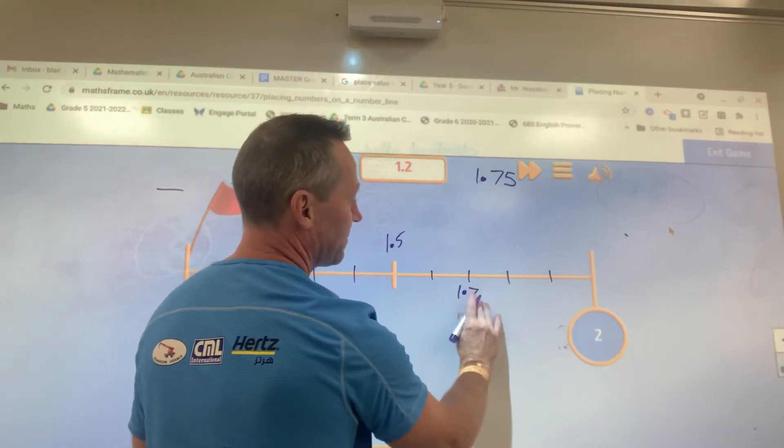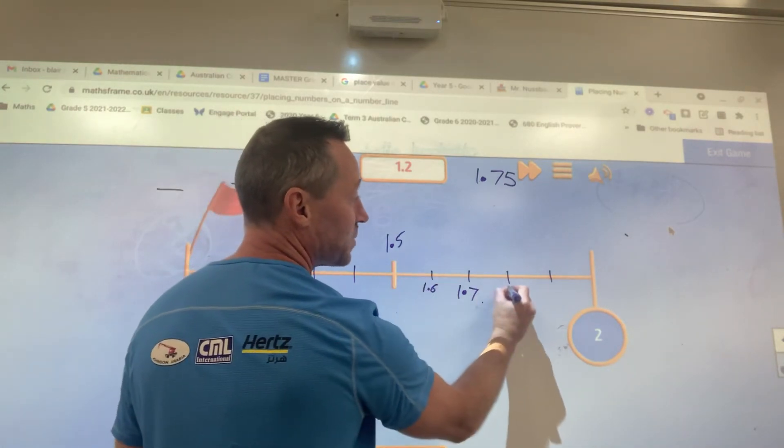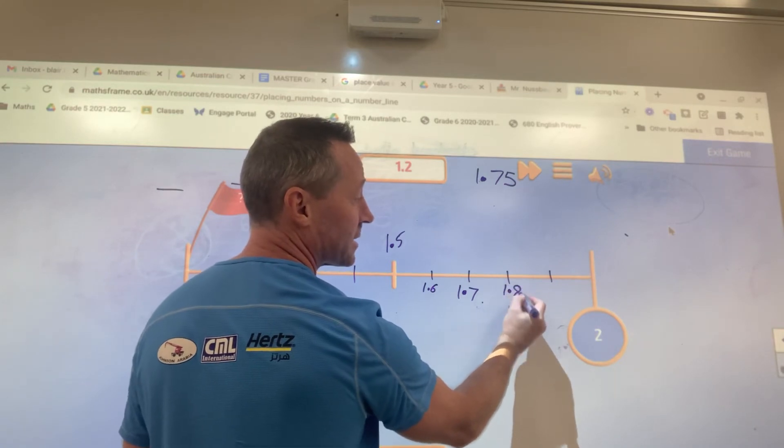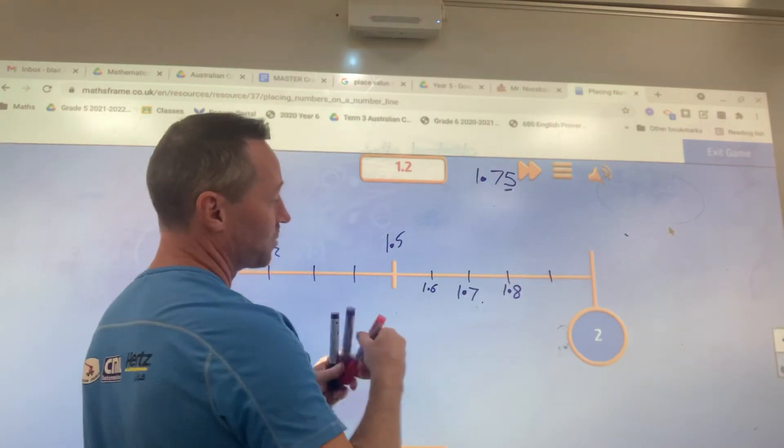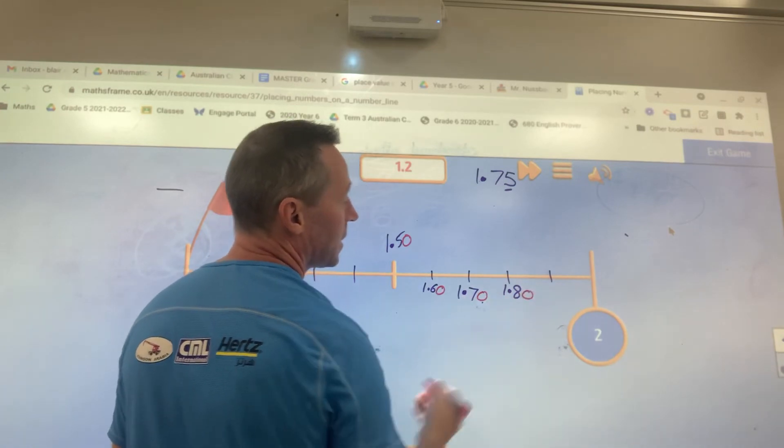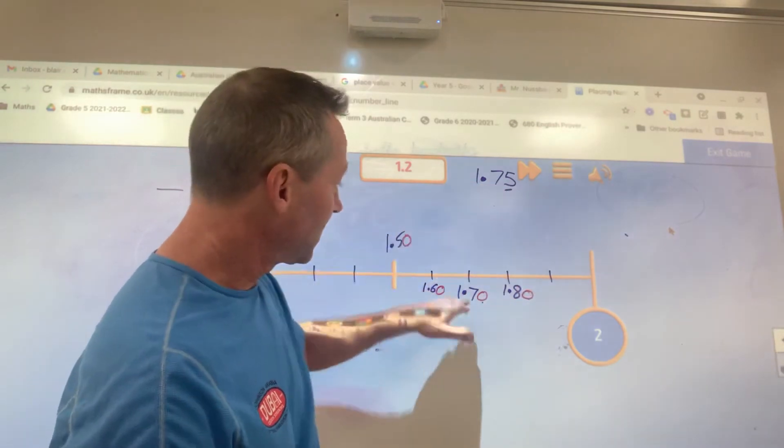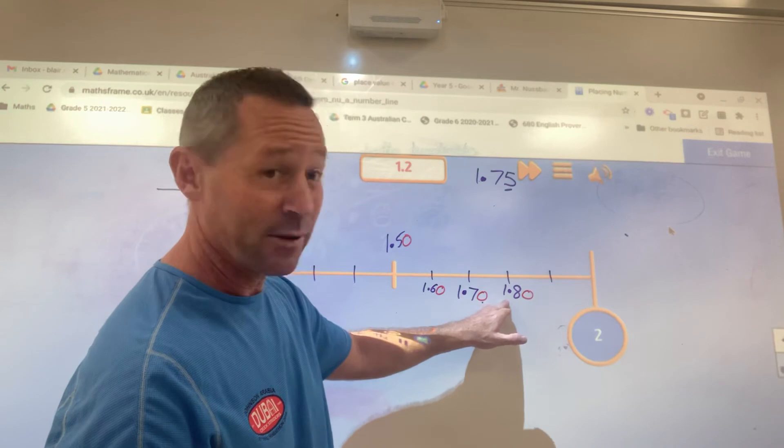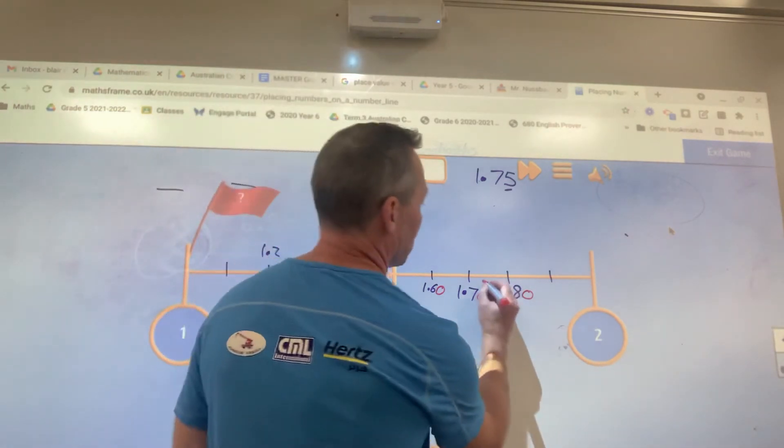So that was 1.7. This is 1.5. This must be 1.6, this must be 1.8. Correct? And again, if I wanted to find this one, I just put a 0 on the end. 1.75 is going to be after 1.70, it's going to be before 1.80. So in between here, I'm cutting these ones up into 10 bits.